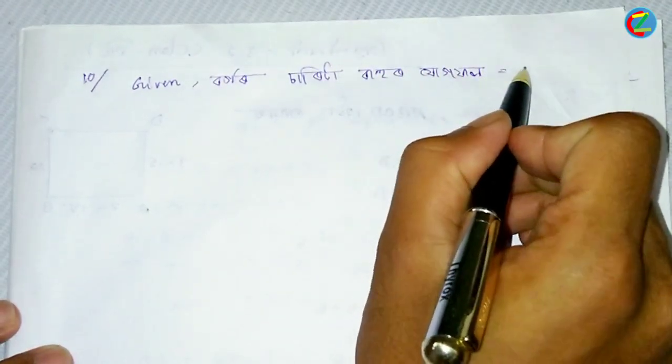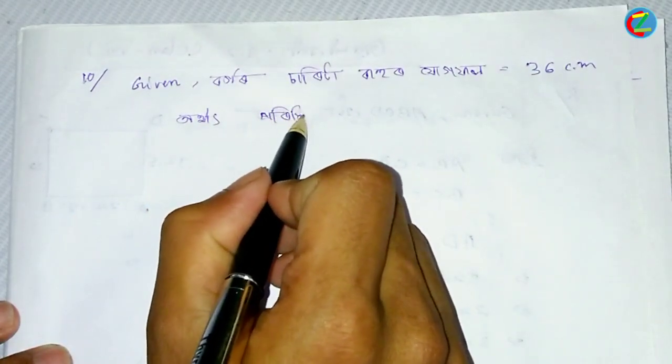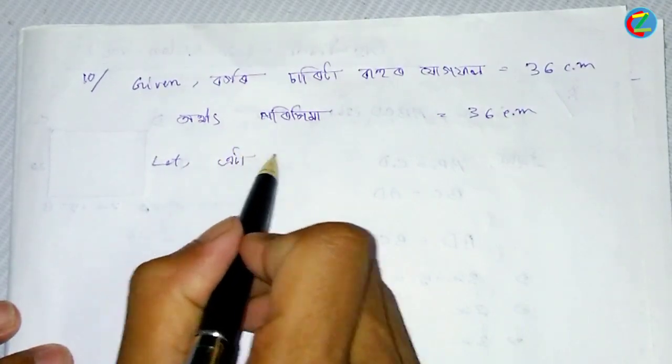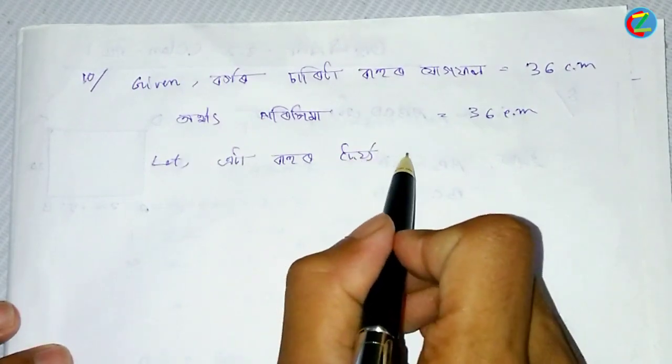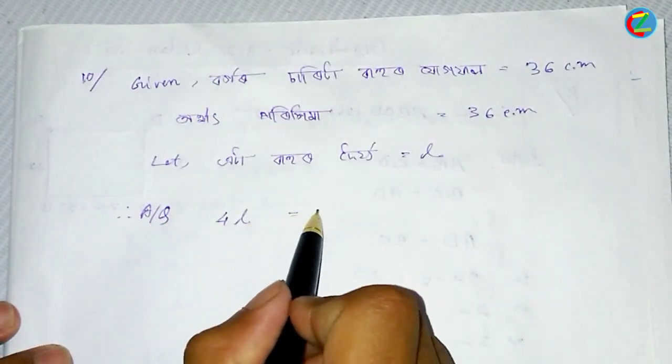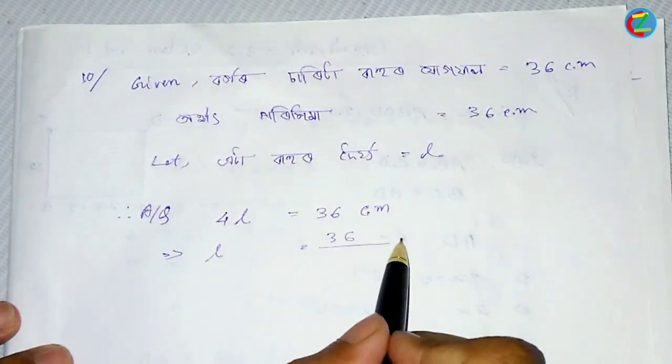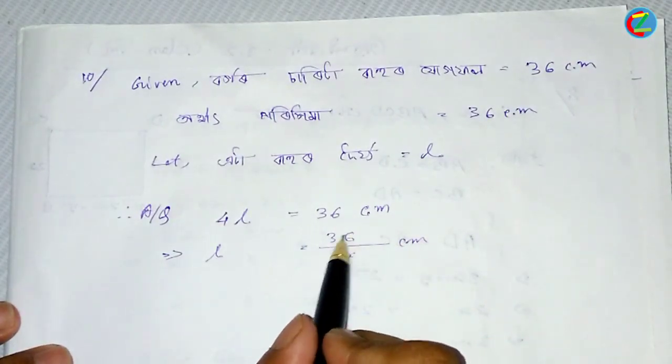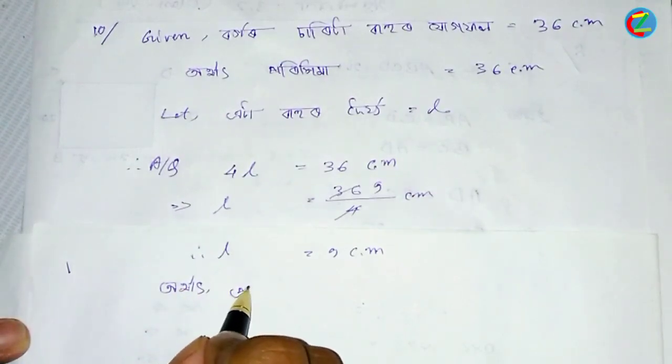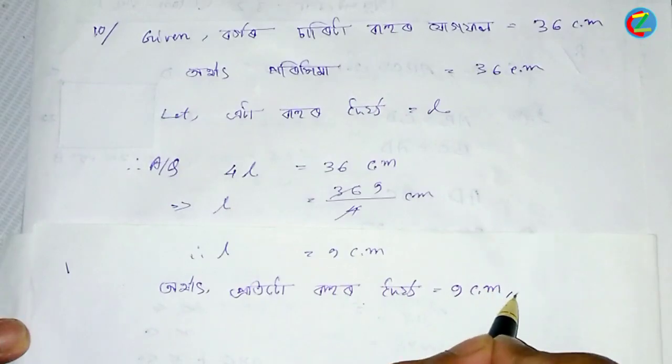The perimeter is 36 cm. Now, the perimeter of the rectangle is 36 cm. Let the side be L. According to the question, 4L equals 36 centimeters. So 36 divided by 4, L is equal to 9 centimeters.